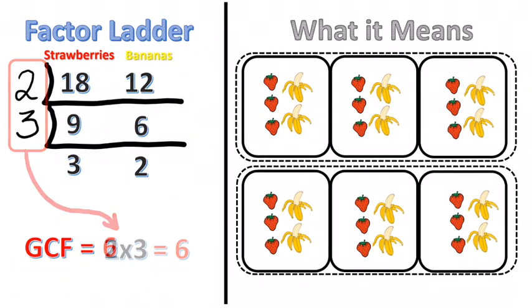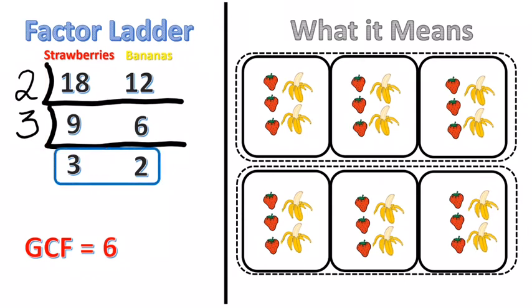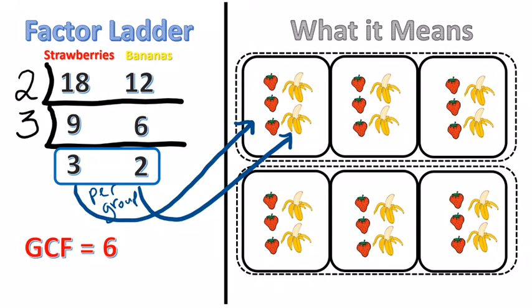The bottom numbers are important too because the bottom numbers on your factor ladder tell you how many is in each group. Those are your per group numbers. So for example strawberries, if I look down that column there's a 3 at the bottom which means there's 3 strawberries per group. And if I look at bananas and I look at the bottom of that column it's 2 bananas per group, and again that's if I make 6 groups.